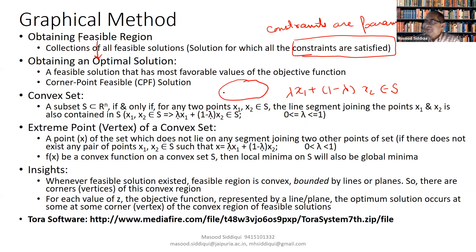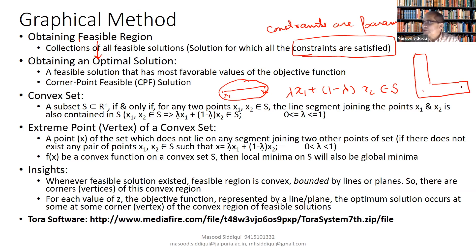Suppose we take any two points x1 and x2 in a space — if the line joining them also belongs to that space, it is a convex set. For a non-convex set, we can find two points where the line joining them does not belong to the set. If we check the feasible region from the graphical method, the feasible region is a convex set — meaning any two points in that region have their connecting line segment also within the region.